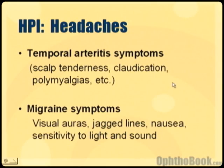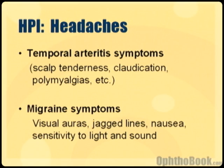Headaches: with an older patient, rule out temporal arteritis symptoms — ask about scalp tenderness, jaw claudication when eating, and polymyalgia, basically muscle aches in the shoulders and neck. With a younger patient, ask about migraine symptoms such as visual auras, jagged lines, weird scotomas, nausea, vomiting, sensitivity to light and sound, and an episodic pattern.